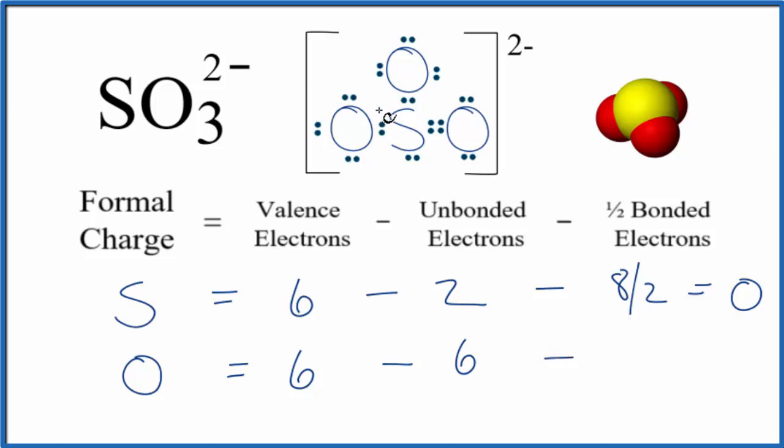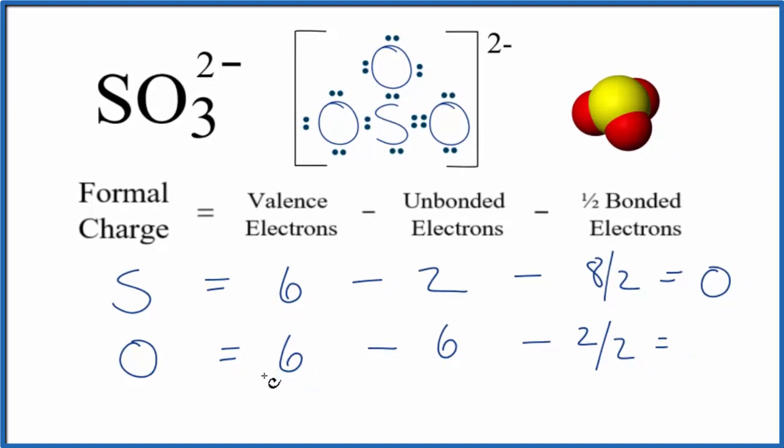Then we're looking at unbonded: two, four, six. So six unbonded electrons. And then we'll subtract one half of the bonded. There are only two here, this is a single bond, so two over two.